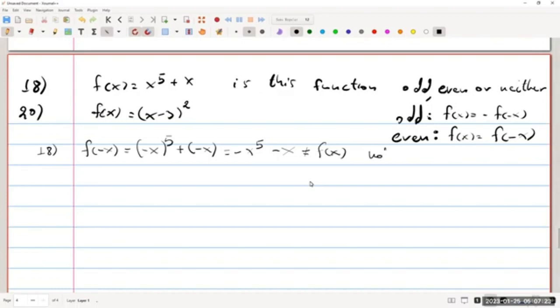But now if we go to check the odd formula minus f of minus x, that will be minus exactly what we calculated above. The minus in front of the parenthesis when distributed flips all the signs. So this becomes x to the fifth plus x. And this is indeed equal to f of x. So the function is odd.